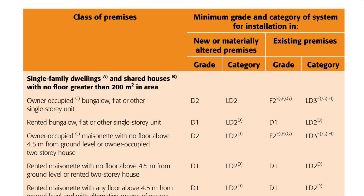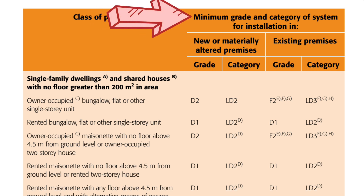The table then divides these areas into further scenarios based on ownership and other physical attributes of the building, and shows in the right-hand column what the minimum grade and category fire detection system should be — both for new and existing properties.